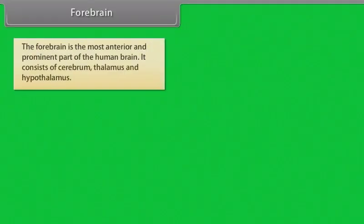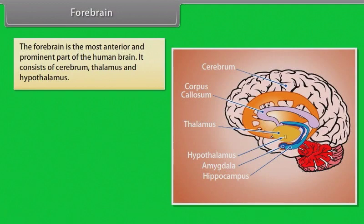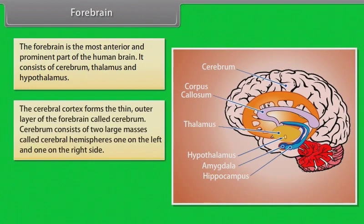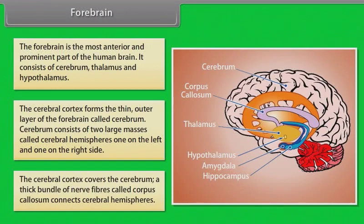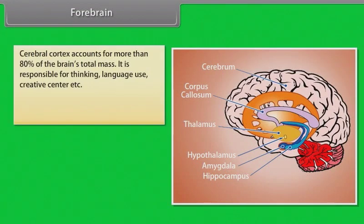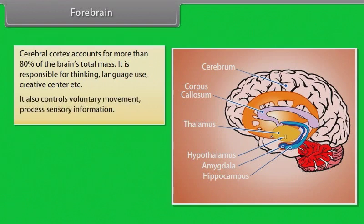The forebrain is the most anterior and prominent part of the human brain. It consists of cerebrum, thalamus, and hypothalamus. The cerebral cortex forms the thin outer layer of the forebrain. The cerebrum consists of two large masses called cerebral hemispheres, one on the left and one on the right side. A thick bundle of nerve fibers called corpus callosum connects them. The cerebral cortex accounts for more than 80% of the brain's total mass and is responsible for thinking, language use, and creative functions.